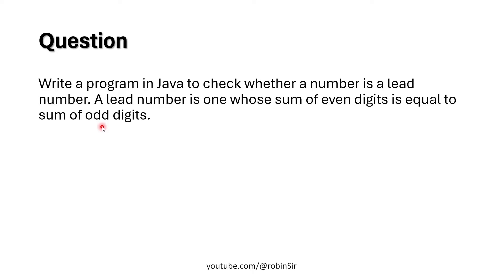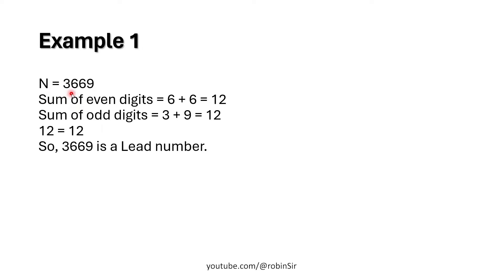Let's understand this with an example. Consider the number 3669. If you pick only the even digits, we have 6 and 6, so 6 plus 6 is 12. And if you take the odd digits and find their sum, 3 plus 9 is also 12. Both sums are equal, and that's why 3669 is a lead number.